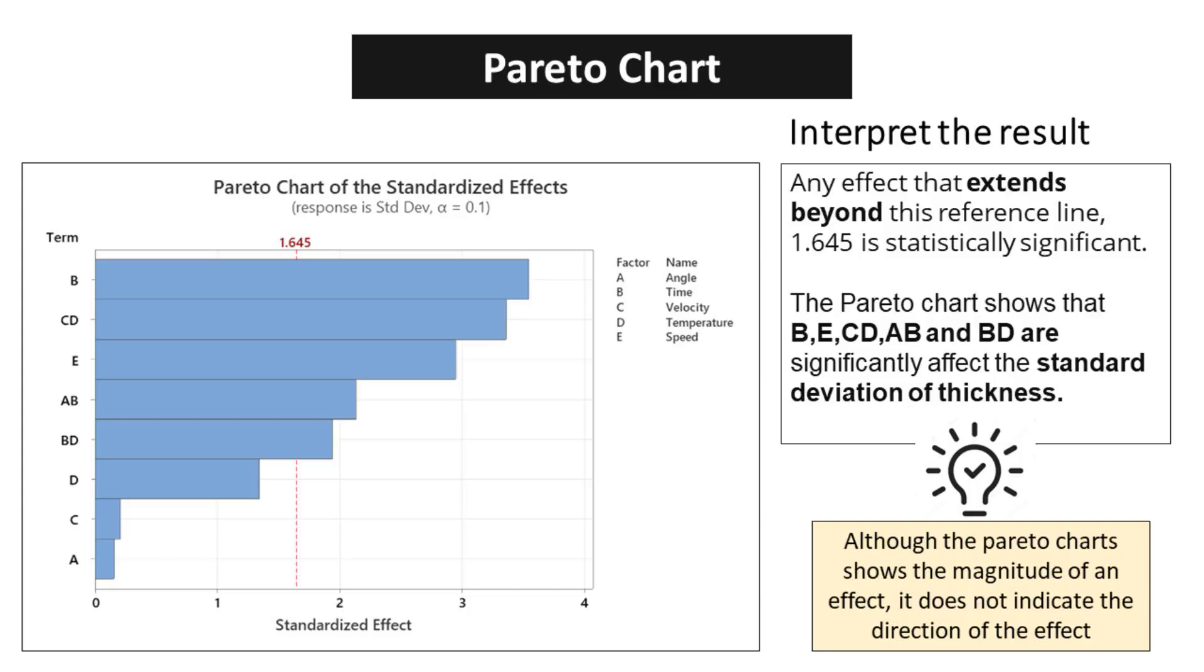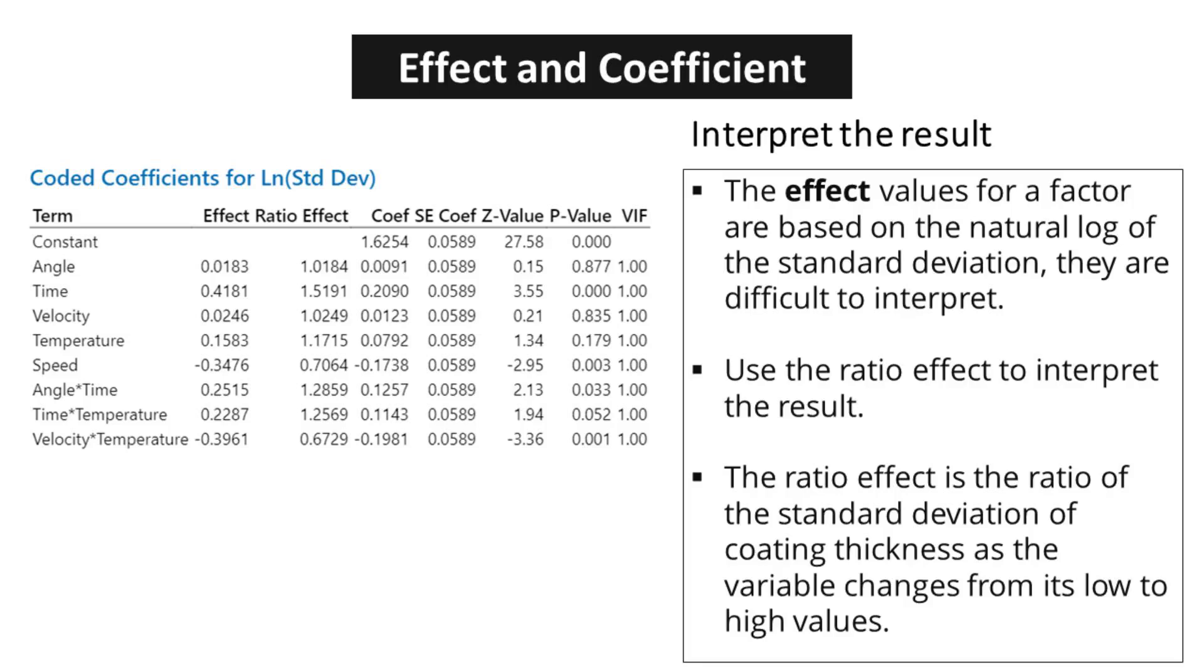Furthermore, the Pareto chart shows that BE, CD, AB, and BD significantly affect the standard deviation of thickness. The effect for a factor represents the predicted change in the mean response when the factor changes from the low level to the high level. It's important to note that effects are twice the value of the coded coefficients. This relationship allows us to quantify and measure the impact of a factor on the response. The sign of the effect indicates the direction of the relationship between the term and the response.